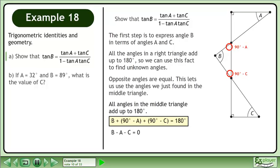Simplify to get B minus A minus C equals 0. Isolate B to get B equals A plus C.